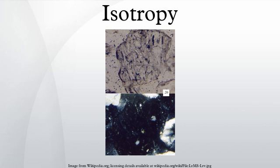In cell biology, if the properties of the cell wall are more or less the same everywhere, it is said to be isotropic. The interior of the cell is anisotropic due to intracellular organelles. In physiology, in skeletal muscle cells, the term isotropic refers to the light bands that contribute to the striated pattern of the cells.